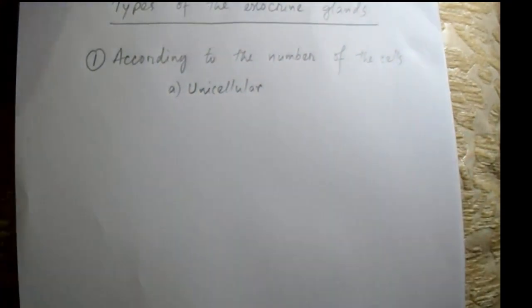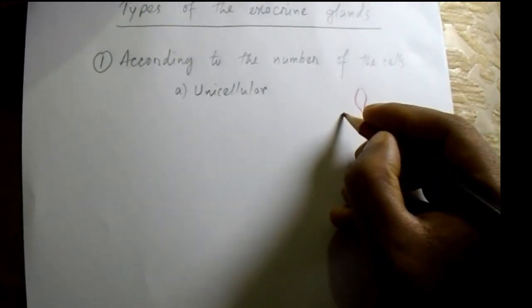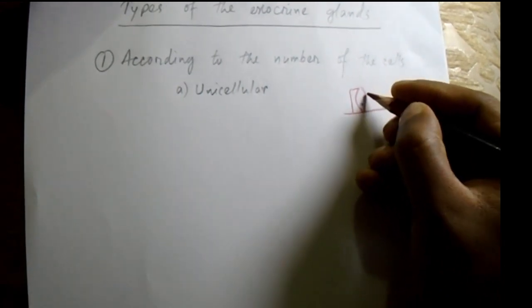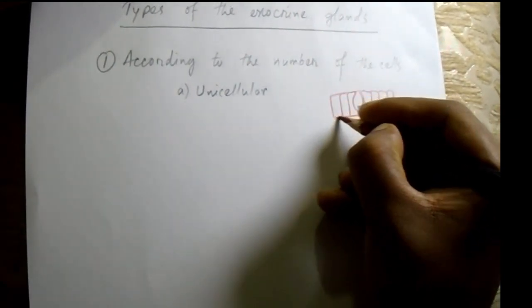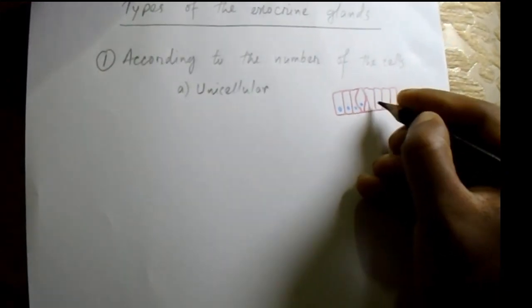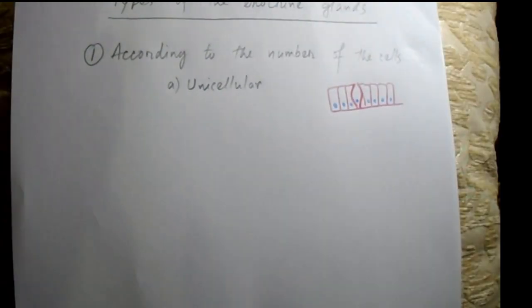According to the number of cells, exocrine glands are of two types. The first is unicellular — from the name we understand the gland consists of one cell. It sits on a basement membrane with epithelial cells on either side. These epithelial cells form simple columnar epithelium. The goblet cell acts as the unicellular gland, consisting of just one cell.